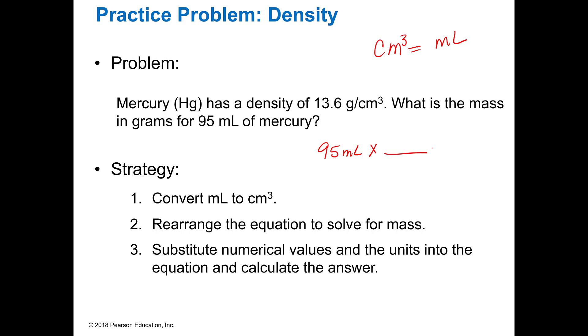I can say that 95 milliliters times—this is what we call a conversion factor—13.6 grams of mercury in one cubic centimeter, and I know that cubic centimeter is the same thing as a milliliter, and then that allows me to do that calculation.